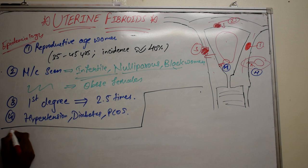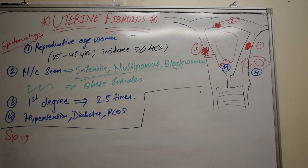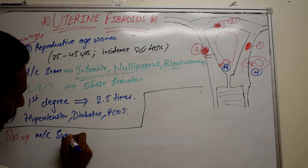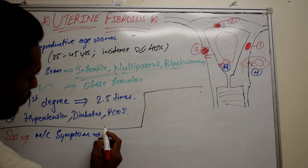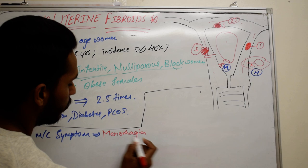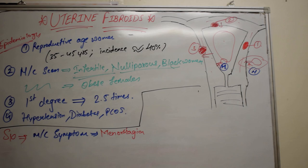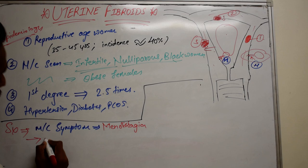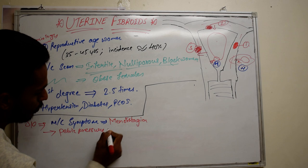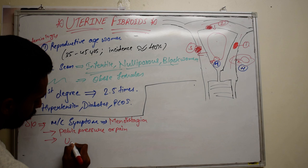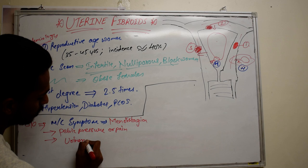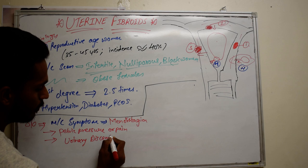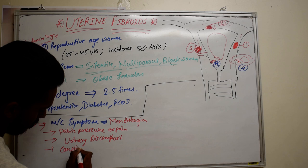Usually fibroids are asymptomatic. But if any symptom is seen, the most common symptom is menorrhagia — that is, menstrual blood flow that is more than normal or longer in duration. Other symptoms include pelvic pressure or pain, urinary discomfort, and constipation, backache, or leg pain.